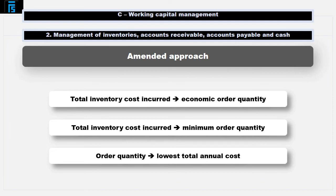For example, imagine a company has calculated the EOQ as being 50 units. The supplier is willing to offer a 1% discount if 75 units are ordered, 2% if 150 are ordered, and 5% if 250 are ordered. The company would calculate the total cost based on order quantities of 50, 75, 150, and 250 units and then select the quantity with the lowest cost.